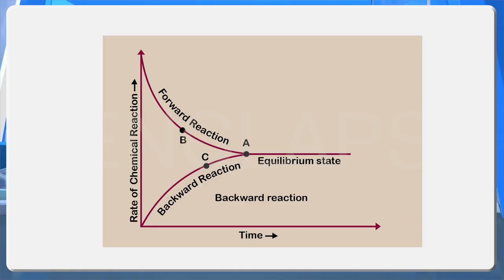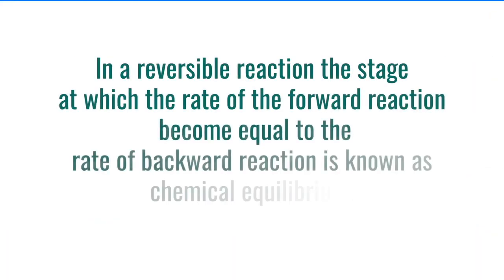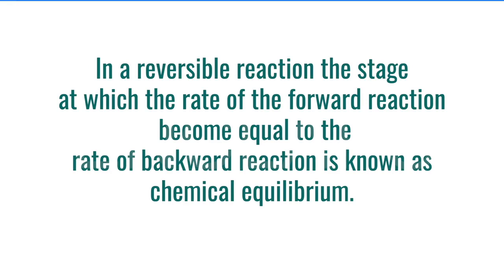Look at this graph. It is a graph that represents a reversible reaction. Time is taken on the x-axis and the rate of chemical reaction is taken on the y-axis. What happens to the rate of forward and backward reaction as time progresses? As time progresses, the rate of forward reaction decreases and the rate of backward reaction increases. At point A, the rates of both forward and backward reaction become equal. In a reversible reaction, the stage at which the rate of forward reaction becomes equal to the rate of backward reaction is known as chemical equilibrium.